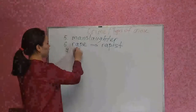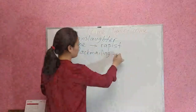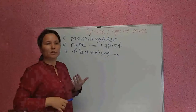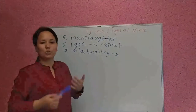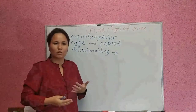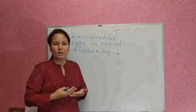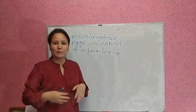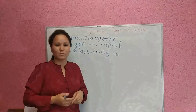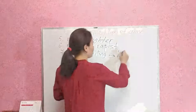Number seven is blackmailing. Blackmailing is an illegal action where you know someone's secret and you threaten that person in order to demand some money — you demand money for keeping quiet, in order not to reveal his secrets. A person who commits blackmailing is called a blackmailer.